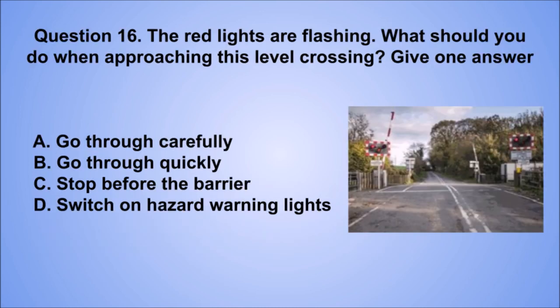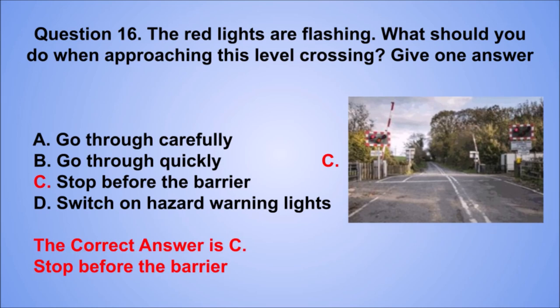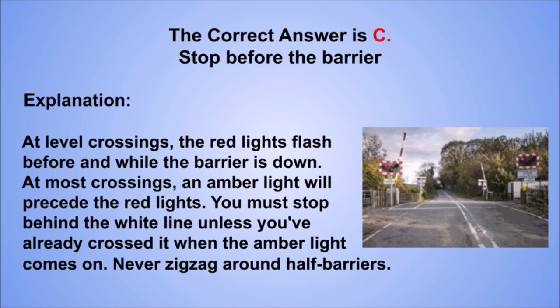Question 16. The red lights are flashing. What should you do when approaching this level crossing? Give one answer. A. Go through carefully. B. Go through quickly. C. Stop before the barrier. D. Switch on hazard warning lights. The correct answer is C, stop before the barrier. At level crossings, the red lights flash before and while the barrier is down. At most crossings, an amber light will precede the red lights. You must stop behind the white line unless you've already crossed it when the amber light comes on. Never zigzag around half barriers.